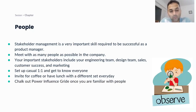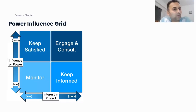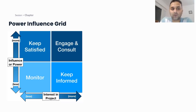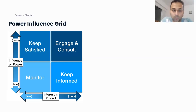We're going to look at what is called the power-influence grid, which will be very helpful once you're familiar with the people in the organization. It's a grid divided into four quadrants: Keep Satisfied, Engage and Consult, Monitor, and Keep Informed. The Y-axis represents the influence or power exhibited by the individual, and the X-axis represents their interest in the product. Based on these two dimensions, you determine how to engage each stakeholder.